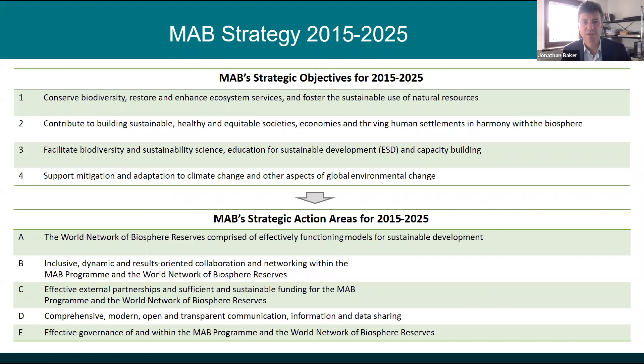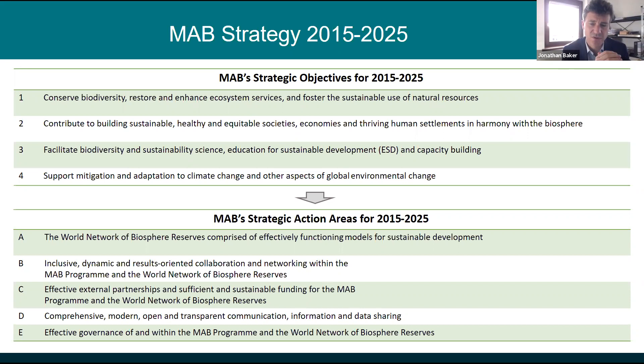To give you an idea of the strategy for MAB — we've been going through successive strategies as MAB has gone through its 50 years of existence. A new strategy was adopted in 2015, covering the 10 years 2015–2025. The key strategic objectives are: to conserve biodiversity, to contribute to building sustainable, healthy, and equitable societies, to facilitate biodiversity and sustainability science, to promote education for sustainable development and capacity building, and to address climate change and other global environmental changes.